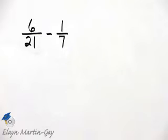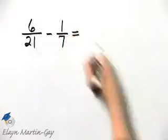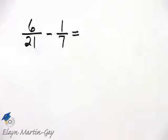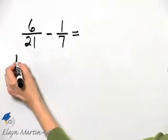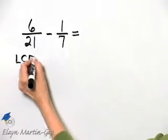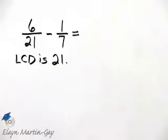As a matter of fact, there are two ways of tackling this example. Let's go one route. Let's look at denominators of 21 and seven and decide what the least common denominator is. It is 21 because seven divides into 21 evenly.